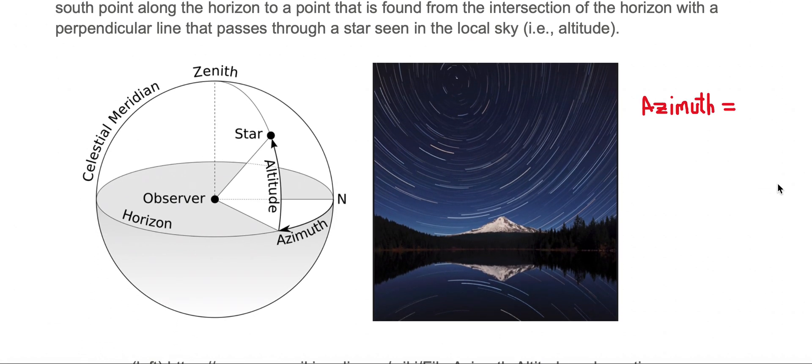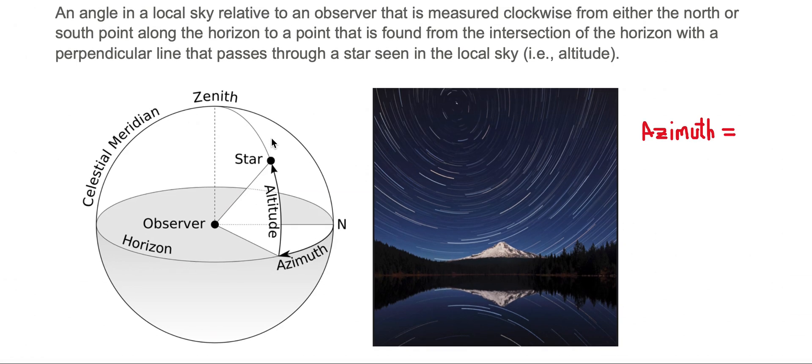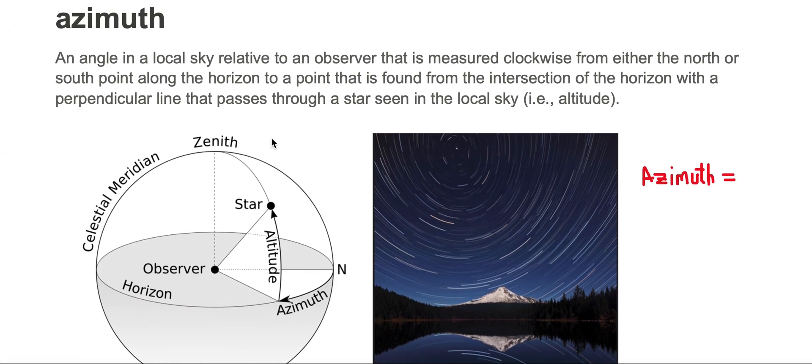What we're looking at here on the left-hand side is an observer's local sky. Here's the observer in the center and the observer's looking at a star. We're trying to find out the vocabulary word azimuth in here. It's an angle in the local sky relative to an observer that is measured clockwise from either the north or the south point along the horizon. So here's the observer, and here's the star, and here's the horizon.